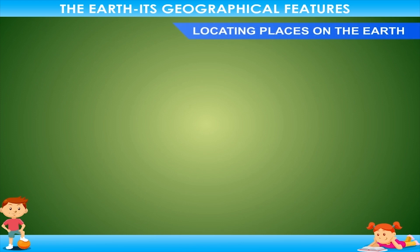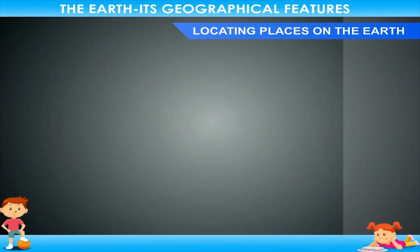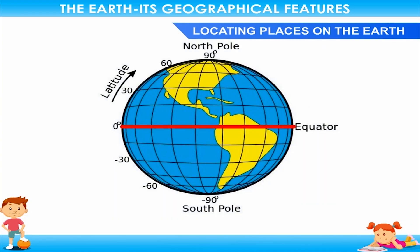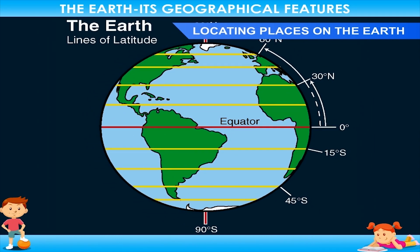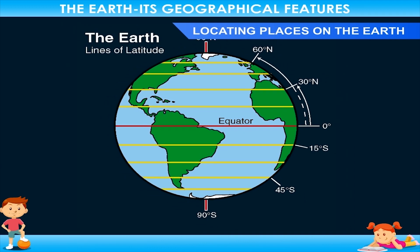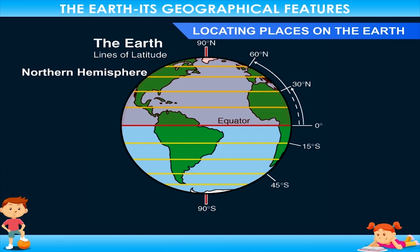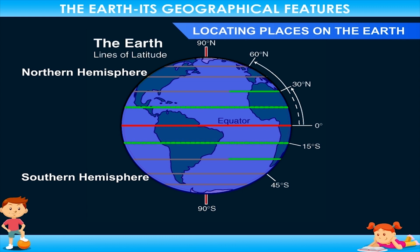Locating Places on the Earth — Latitudes. The equator is an imaginary line drawn halfway between the North Pole and the South Pole. The world is divided into two halves or hemispheres by the equator. The portion from the equator to the North Pole is called the Northern Hemisphere. The imaginary lines drawn parallel to the equator are called parallel lines or lines of latitude. The equator is the largest parallel, and the parallels are kept at an equal distance and do not touch each other.